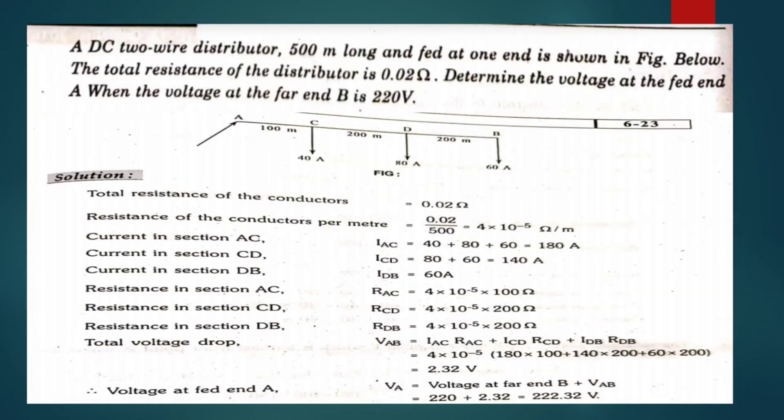Second problem: A DC two-wire distributor 500 meters long, fed at one end, is shown in the figure. The total resistance of the distributor is 0.02 ohms. Determine the voltage at the fed end when the voltage at the far end B is 220 volts.